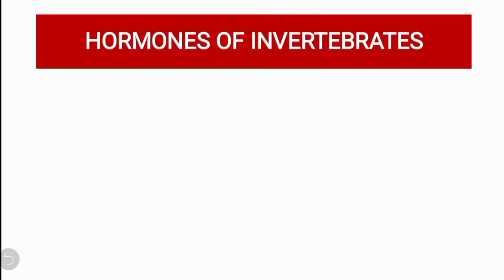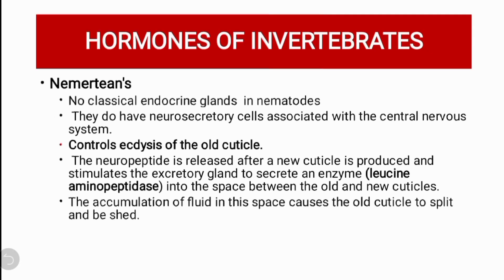Nematodes do not have a classical endocrine system, but they do have neurosecretory cells associated with their central nervous system. The major function performed by these neurosecretory cells is ecdysis — the molting or shedding of the old cuticle. A neuropeptide is released after a new cuticle layer is produced.